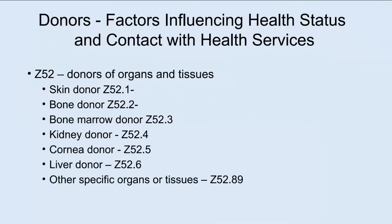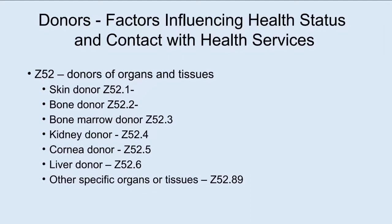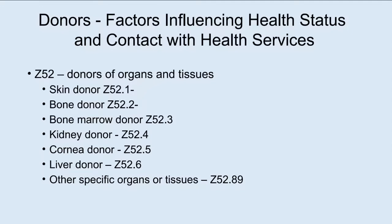Finally, there are Z codes for when an individual is being seen for testing as a possible organ donor. They have to match tissues and confirm the donor is healthy enough. These are fairly specific codes under Z52: skin donors Z52.1 with additional digits, bone marrow donors Z52.3, liver donors Z52.6, and other organs or tissues Z52.89. The person coming in is fine, but they're being tested to see if they would be a suitable donor.